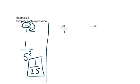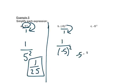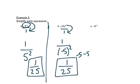In this case, we have negative 5 to the negative 2 over 1. When we move it to the bottom, it will still be in parentheses, but the exponent sign changes — not the number, just the exponent. So that becomes negative 5 to the 2nd. Remember that negative 5 to the 2nd means negative 5 times negative 5, which is still 25. And we keep the 1 on top to hold the place.